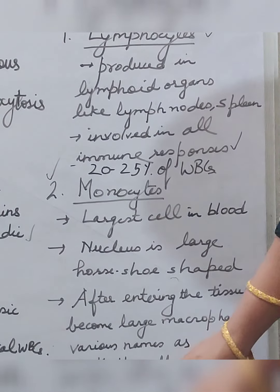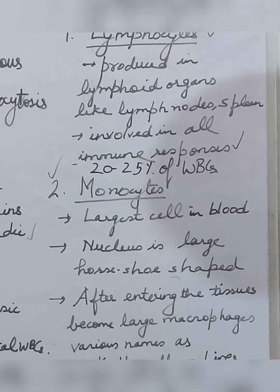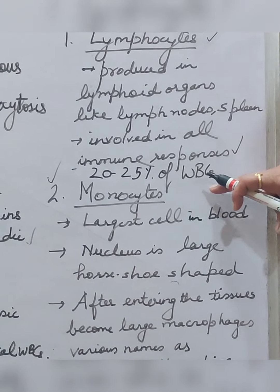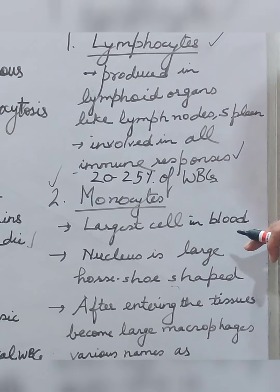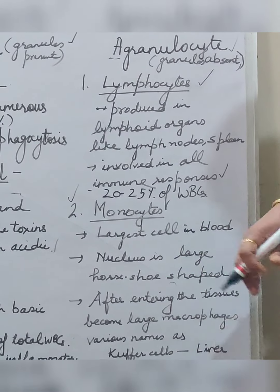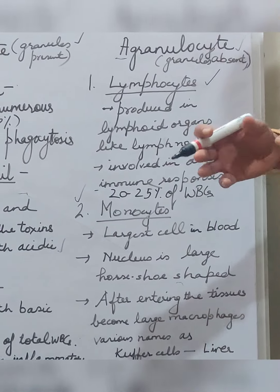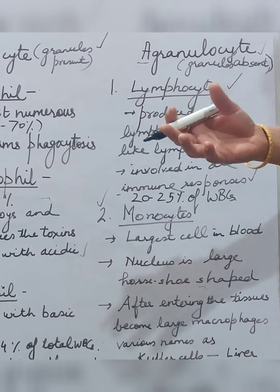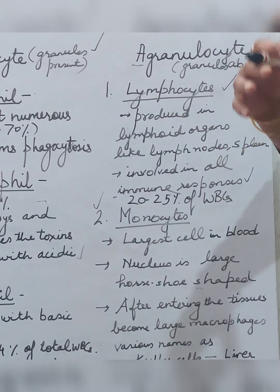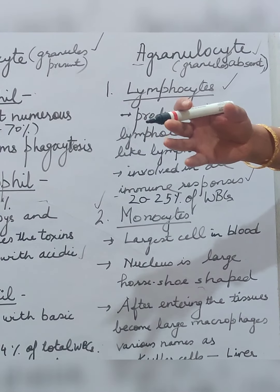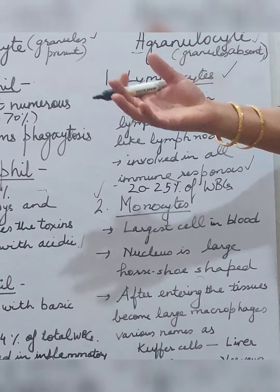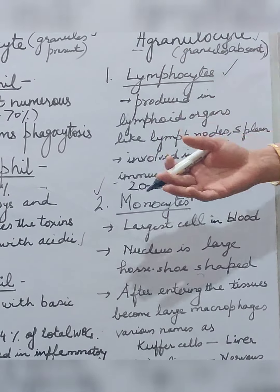Monocytes make up about 7% of total WBCs. They are the largest cells in blood, with a horseshoe-shaped nucleus — the largest nucleus among blood cells. They can migrate into any tissue and convert into large macrophages, becoming part of the reticular endothelial system. In different tissues they have different names.